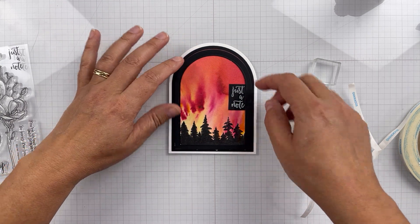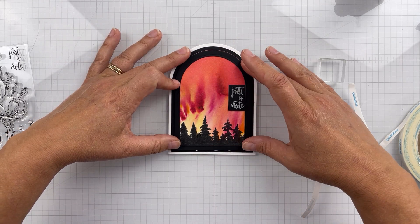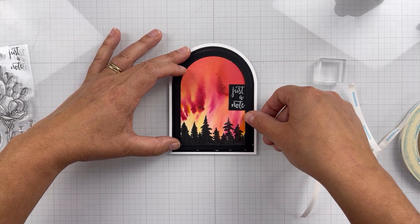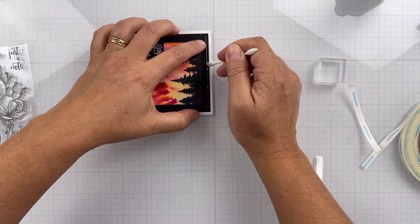But here I just cut another piece of black cardstock to do a frame to give that window look. And then I put it onto an A2 size card base, white card base.